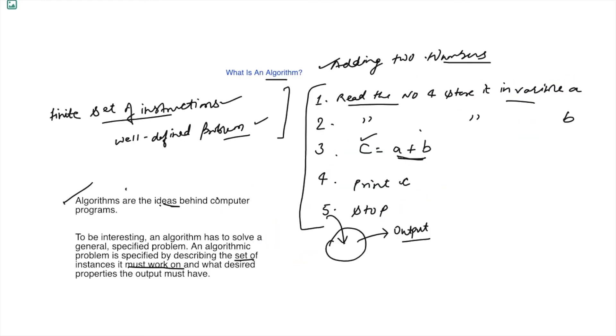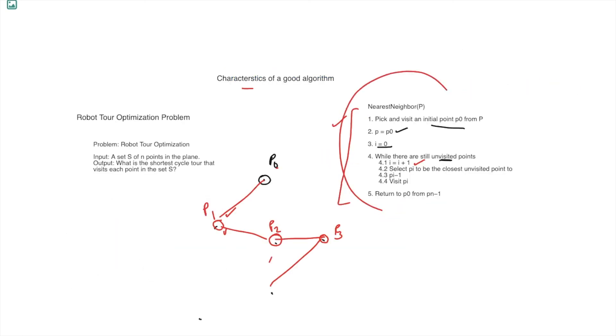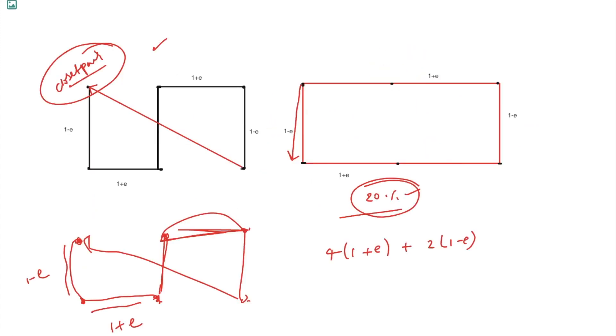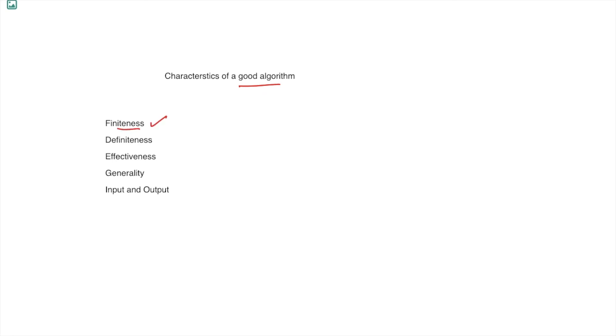Now we know the various difficulties in designing algorithms. An algorithm is not always simple — we have to think about various approaches, as the nearest neighbor algorithm was not working correctly for all sets of inputs. The characteristics of a good algorithm are: Finiteness — the algorithm must terminate after a finite number of steps. Definiteness — the steps must be precisely and unambiguously defined. Effectiveness — operations should be basic enough to be traced with paper and pencil.